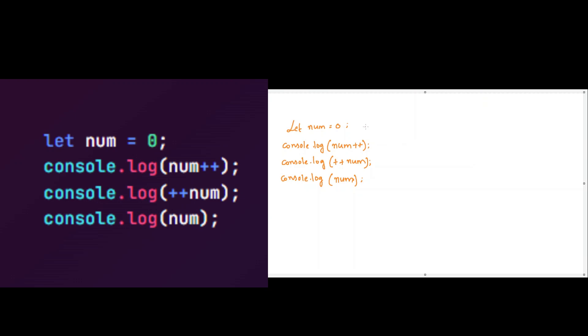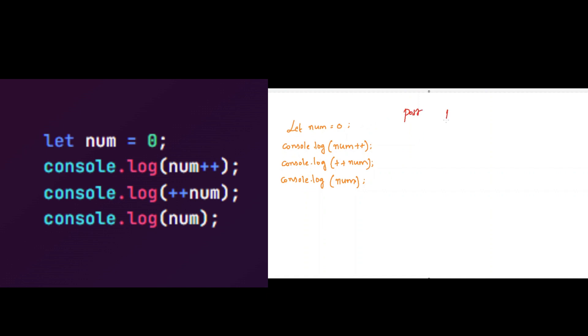This is very hard if you don't know the concept, but if you know the concept, it is very simple. Here we are using postfix operator and prefix operator. Postfix operator will return the value and then increment it later, whereas prefix operator will increment the value and then return it.